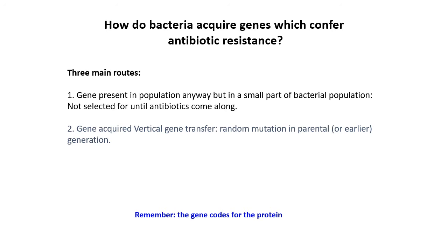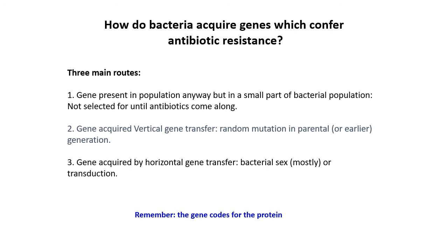Providing that gene confers an evolutionary advantage, it will continue to be passed on. All the time we have antibiotics in our natural environment and inside us, there is a strong selection pressure for that gene to continue to be passed down the line. The other alternative is horizontal gene transfer, where bacteria can pass genes between each other within a generation. This can be bacteria to bacteria, or bacteria can pick up small plasmids — small round bits of DNA — or acquire genes via viruses which can bind to bacteria and directly inject resistant genes into them.